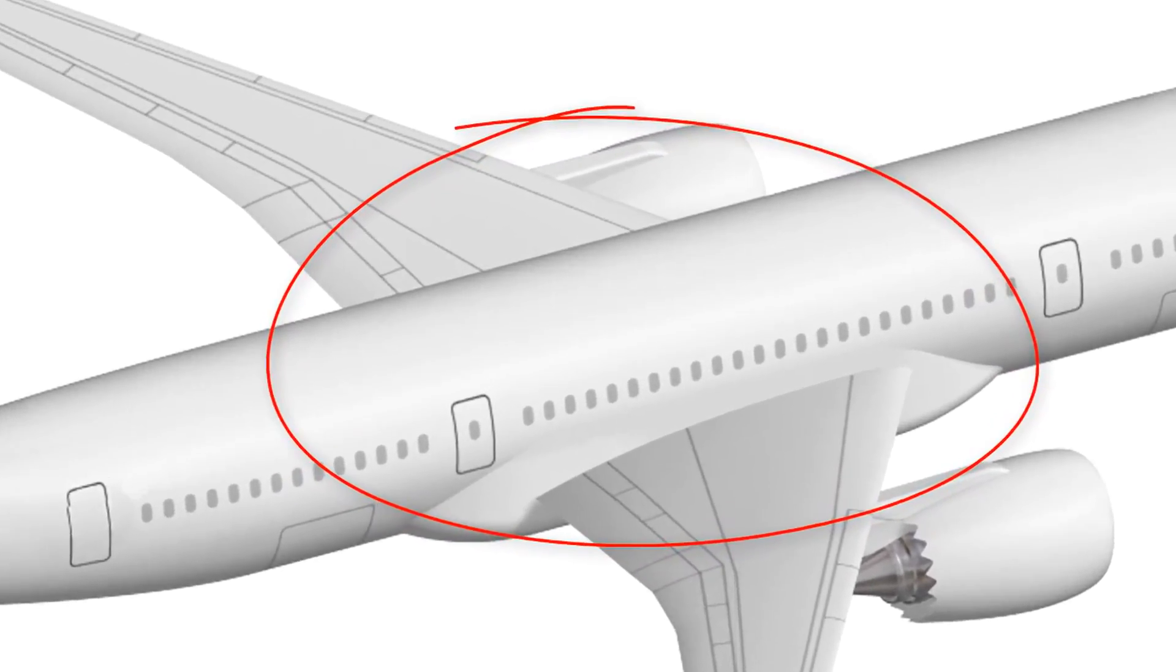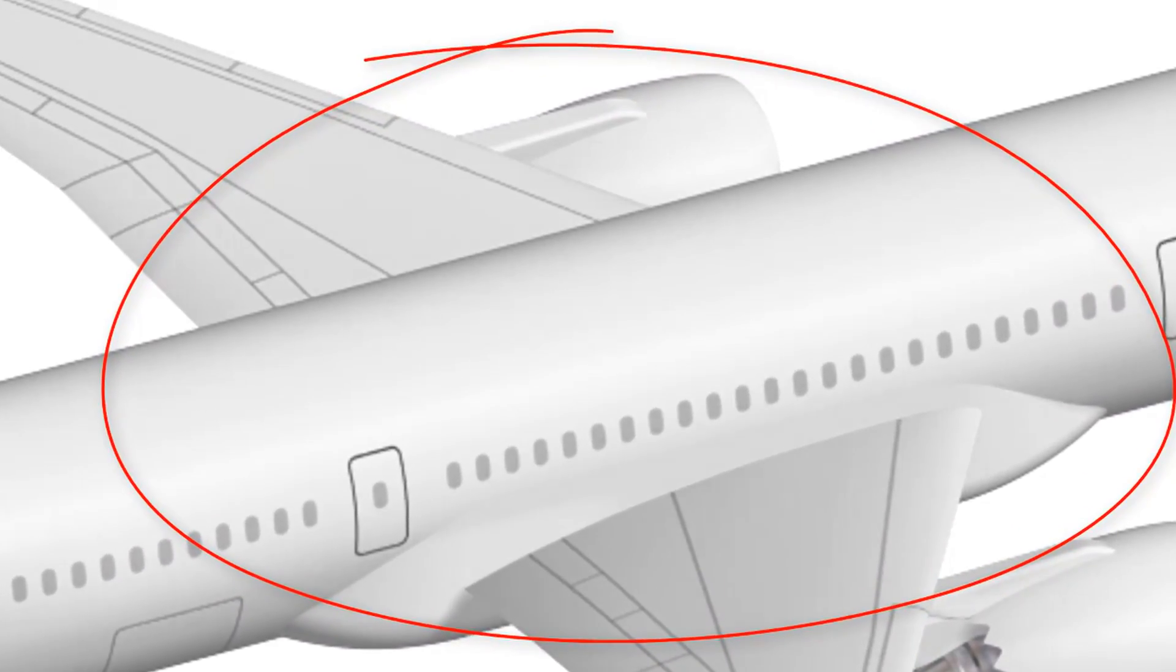So how can we design the connection between the fuselage structure and the wing structure? There are several ways and I will discuss two solutions with you to help you understand how important the design of load introduction into a structure is.